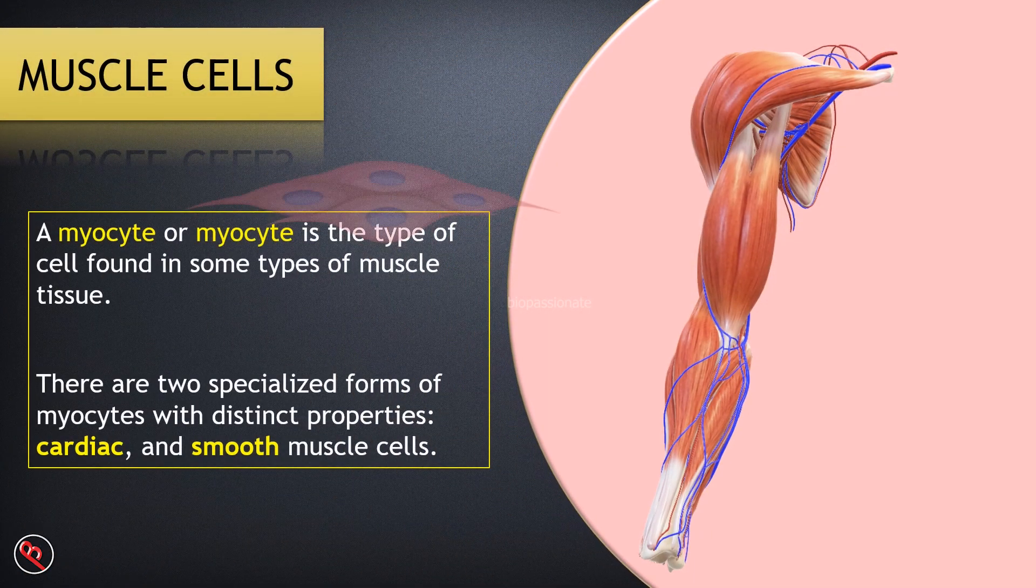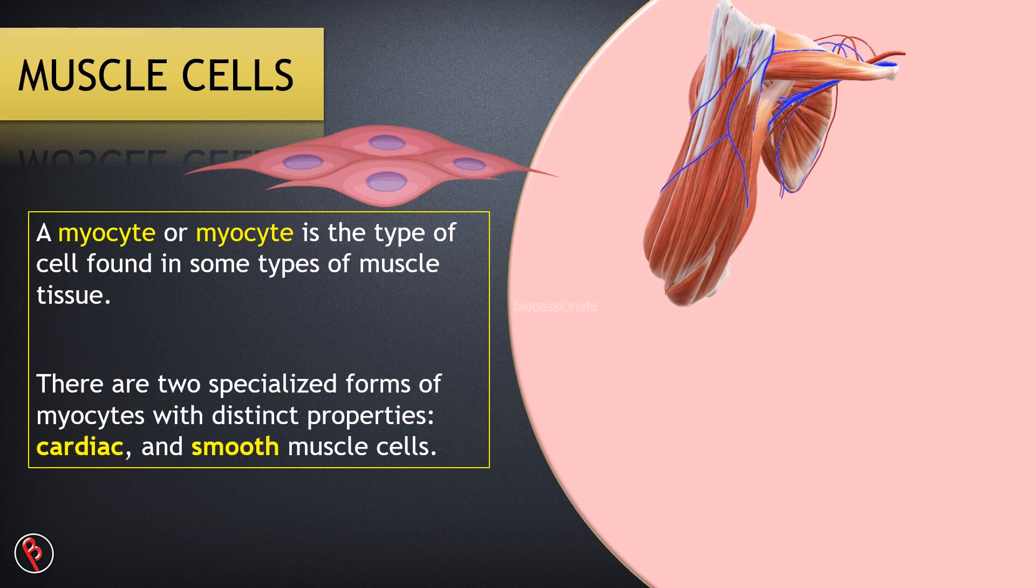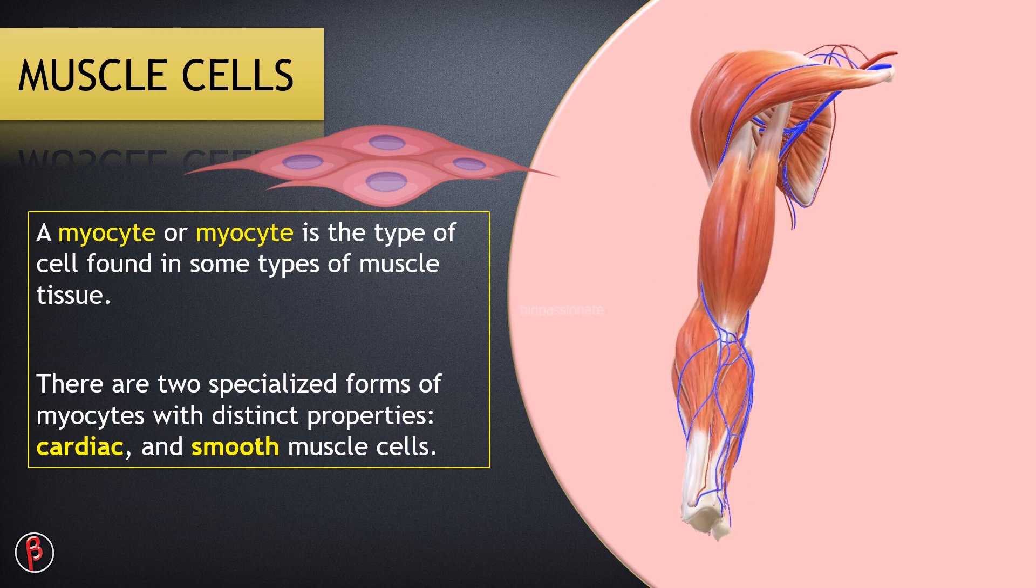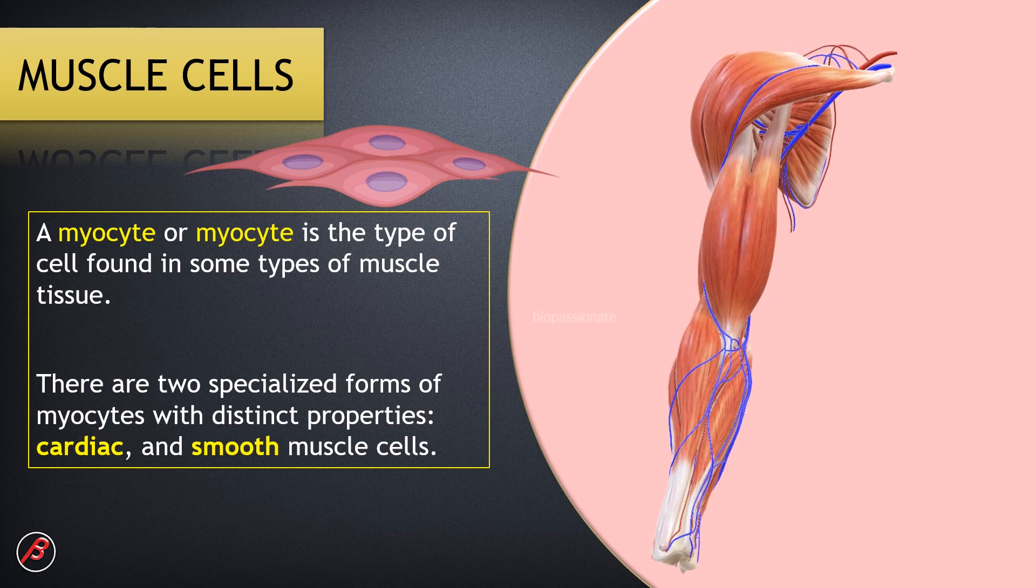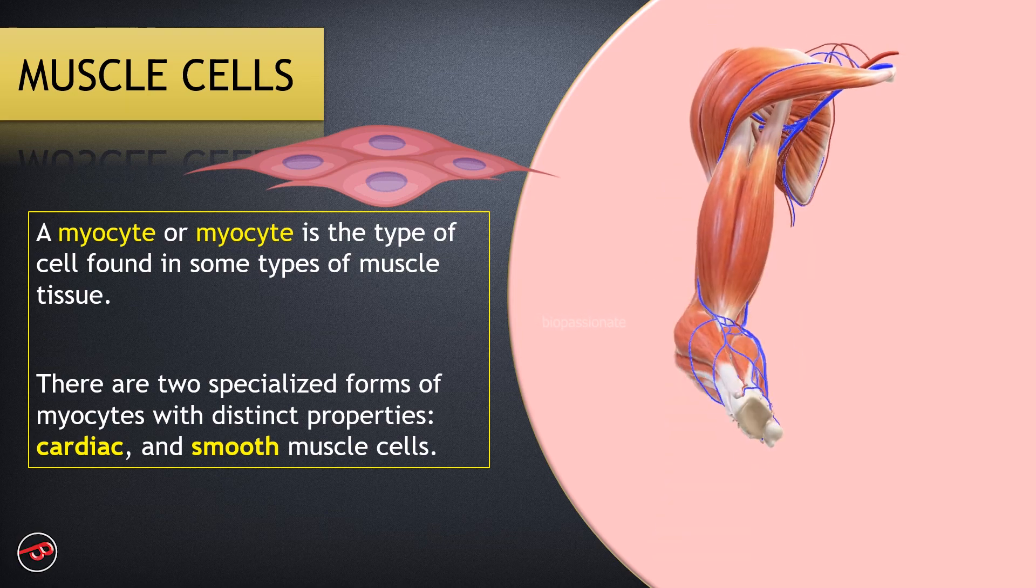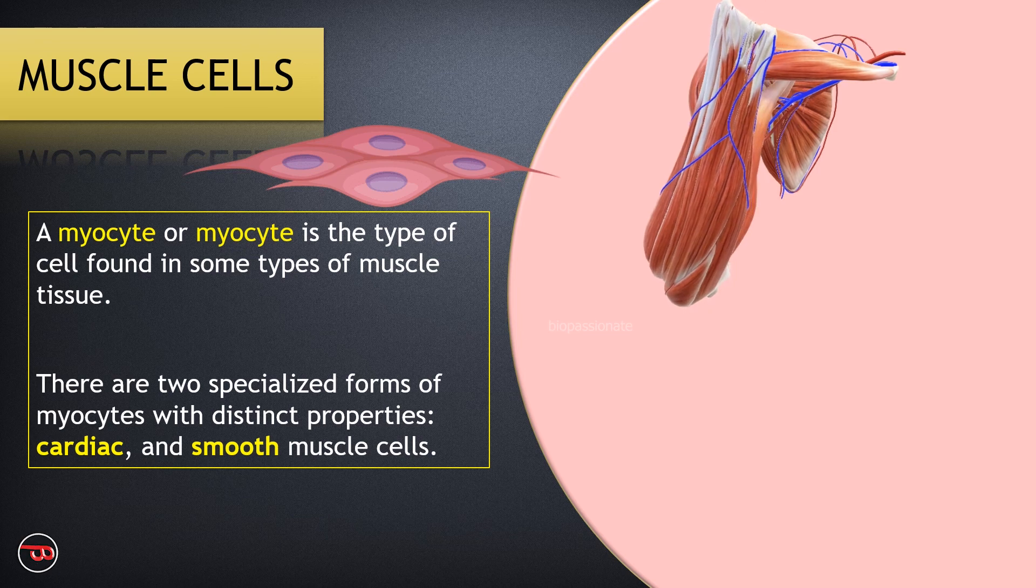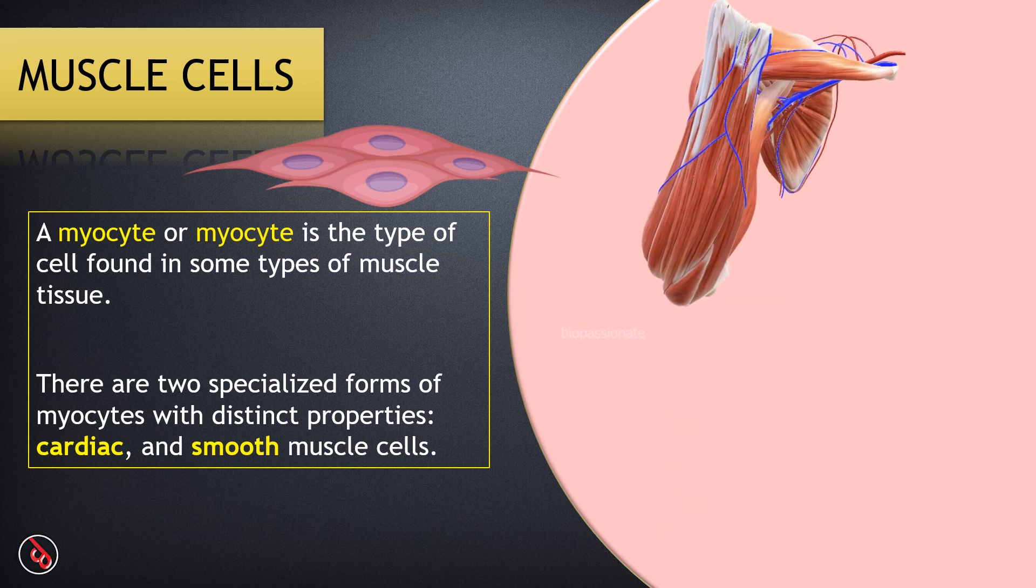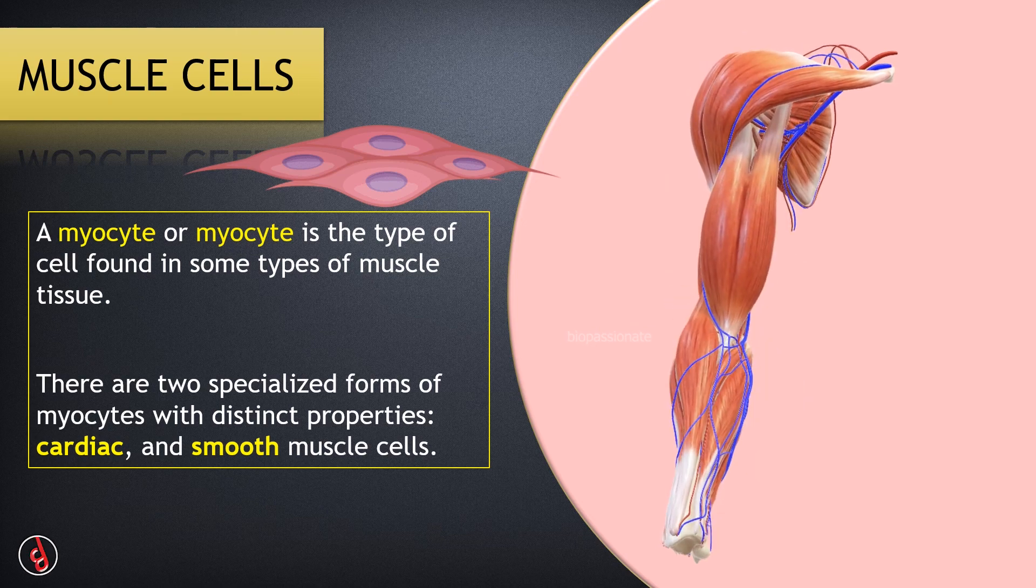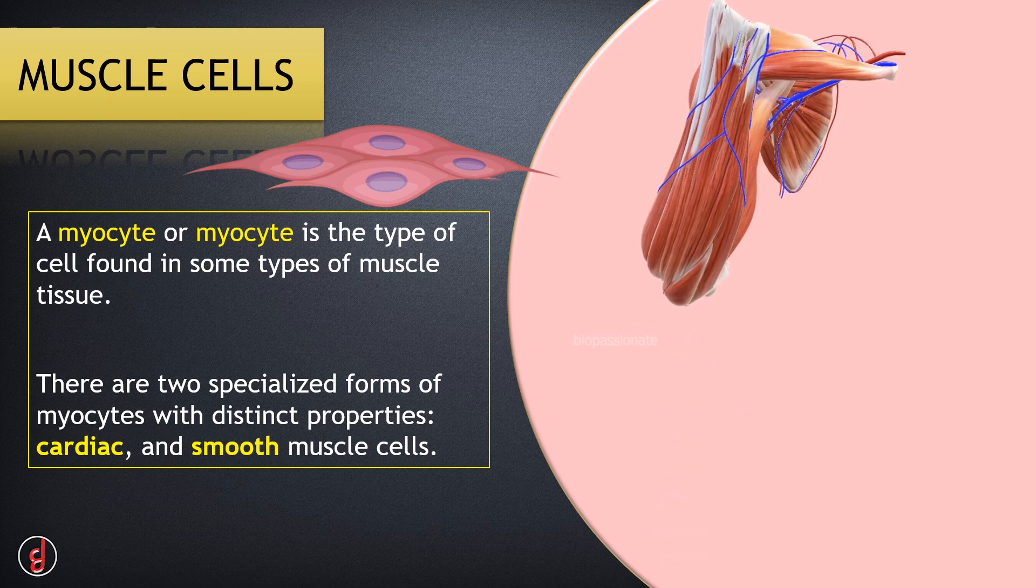Muscle cells are myocytes, which are found in muscle tissues. There are two specialized forms of myocytes with distinct properties: cardiac and smooth muscle cells. Muscles may be voluntary or involuntary. Some of the muscles are under our control, but some are not.